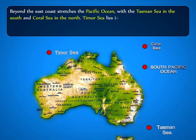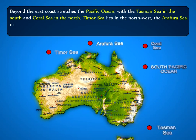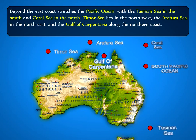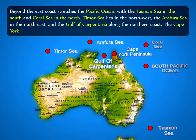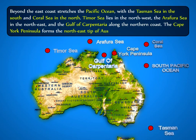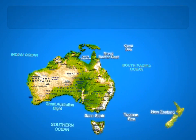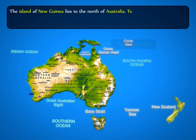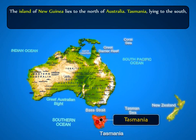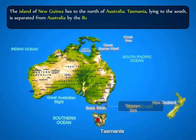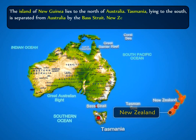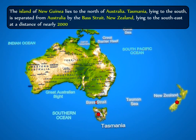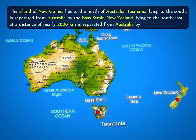Timor Sea lies in the northwest, the Arafura Sea in the northeast, and the Gulf of Carpentaria along the northern coast. The Cape York Peninsula forms the northeast tip of Australia. The island of New Guinea lies to the north. Tasmania, lying to the south, is separated from Australia by the Bass Strait. New Zealand, lying to the southeast at a distance of nearly 2,000 kilometers, is separated from Australia by the Tasman Sea.